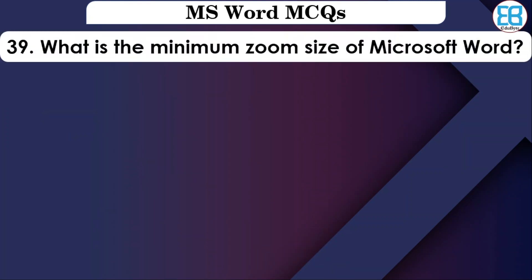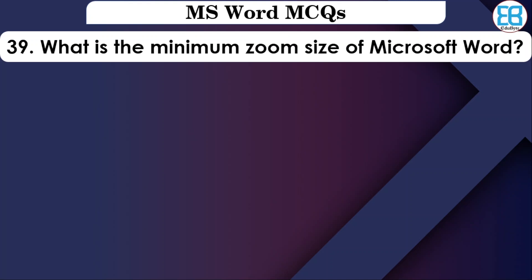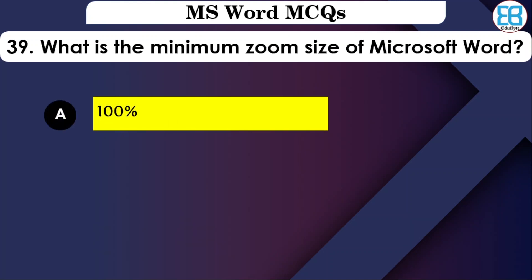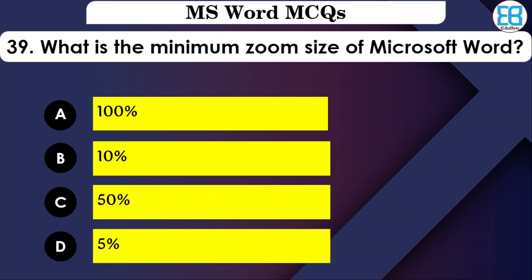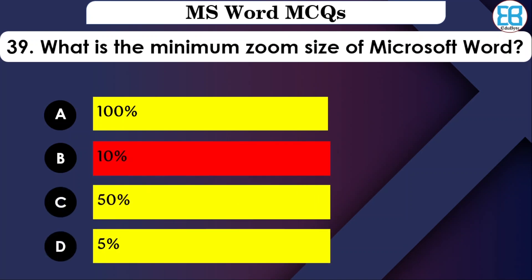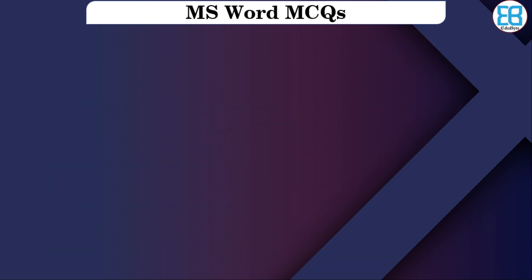What is the minimum zoom level in MS Word? The options are: 100%, 10%, 50%, or 5%. The correct option is 10% — the minimum zoom level in MS Word is 10%.